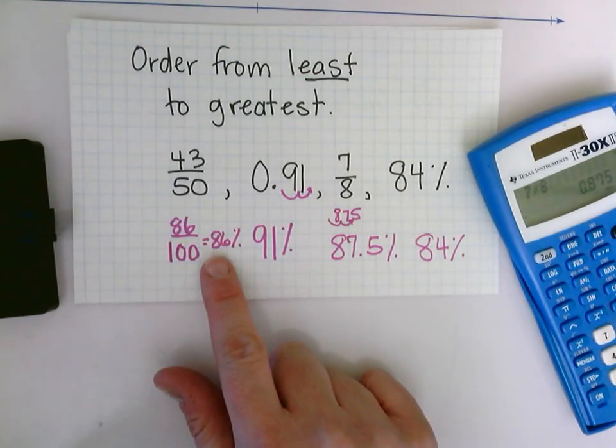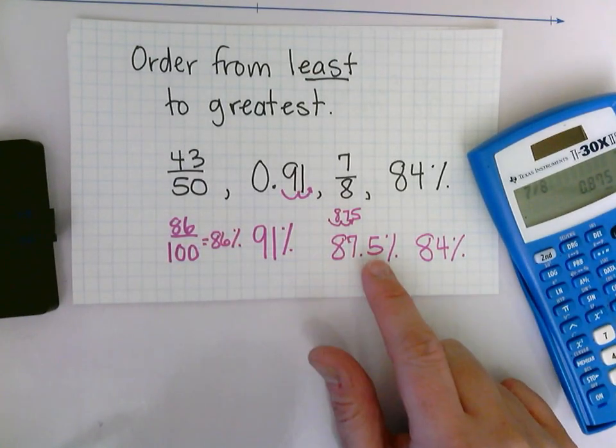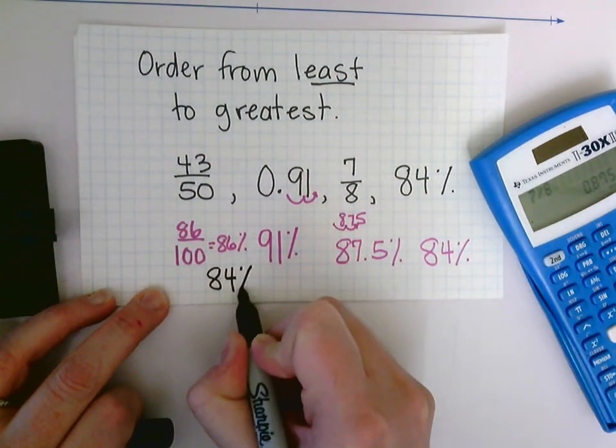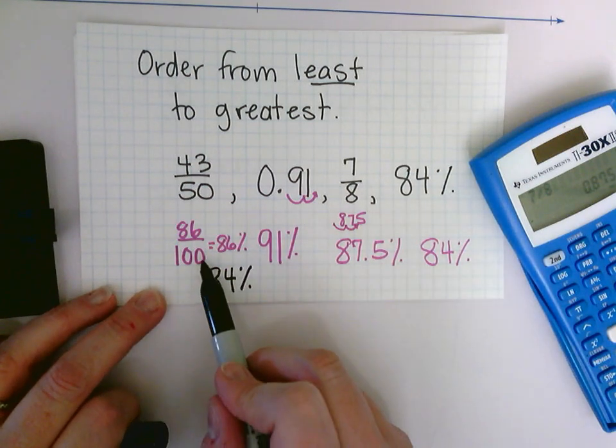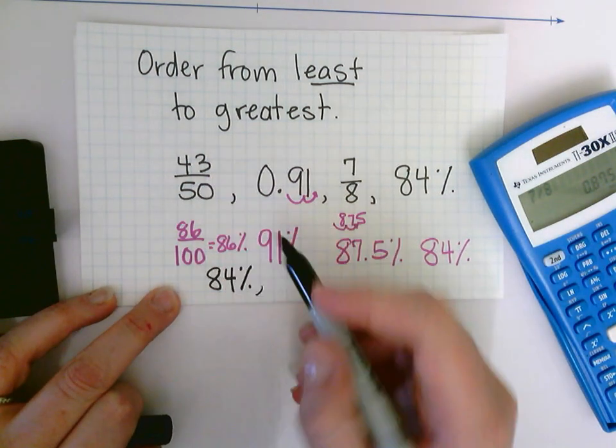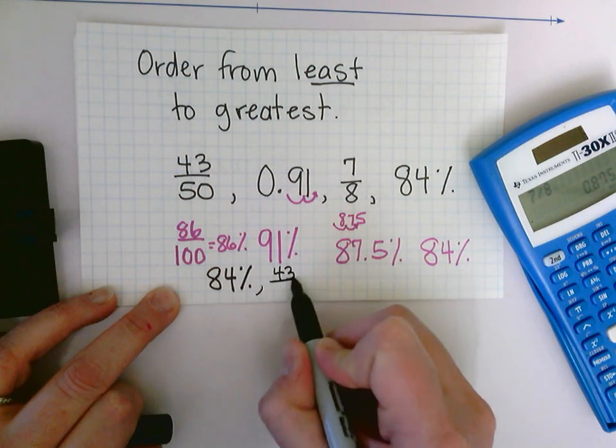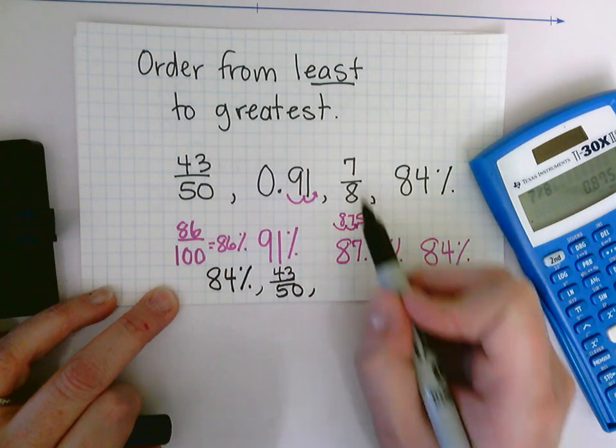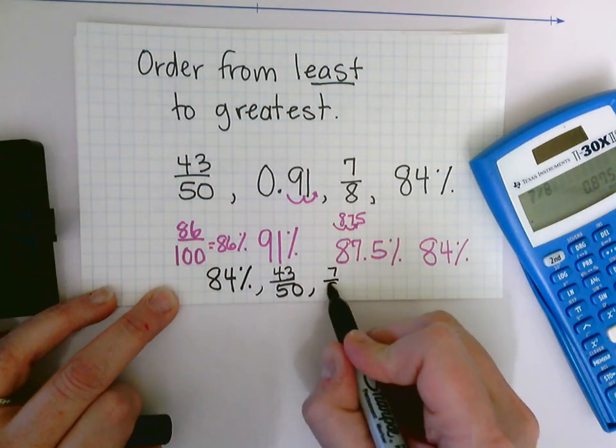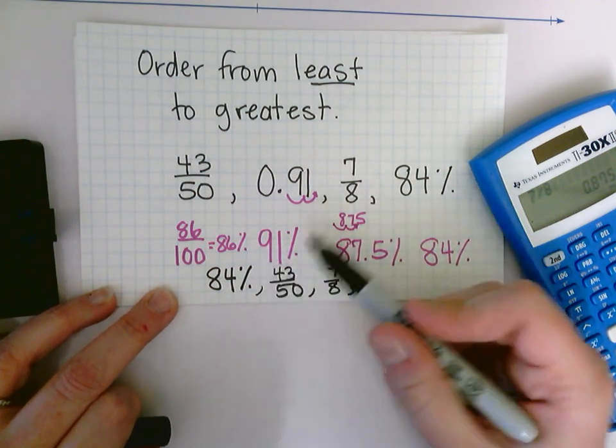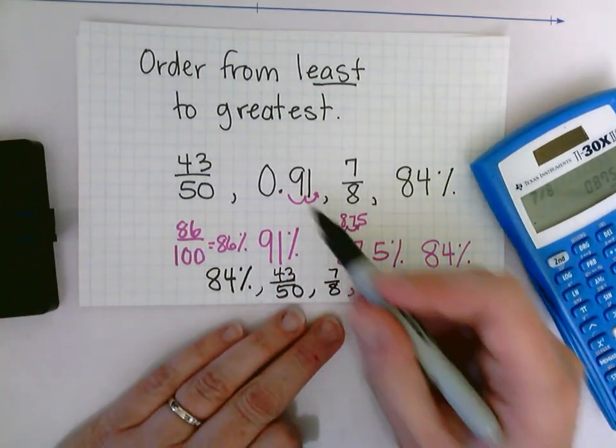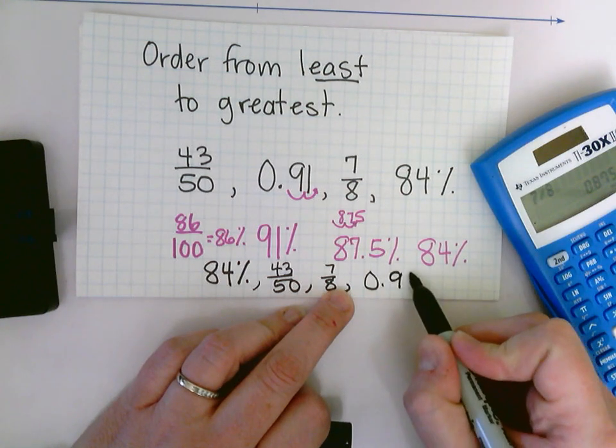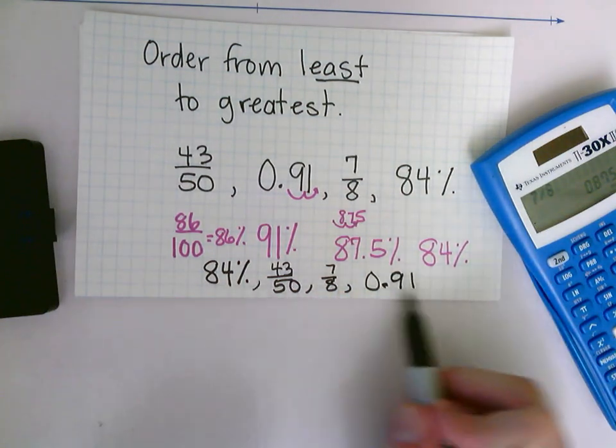So I'm looking at 86, 91, 87.5, and 84. So 84 would be first, 84%. Next would come 86%, but I'm going to write it as the original value of 43/50. The next would be 87.5%, but I'm going to write it as its original value from the problem, 7/8. And then lastly, 91% would come last, which I'm going to write it as its original value from the problem, 91/100. So here I have them ordered from least to greatest.